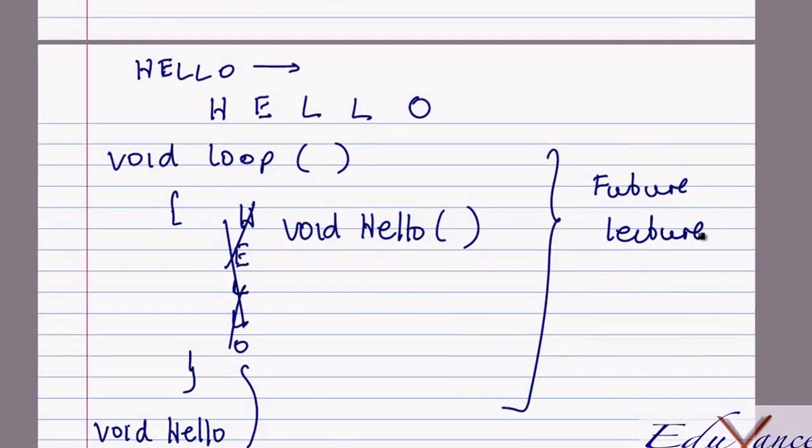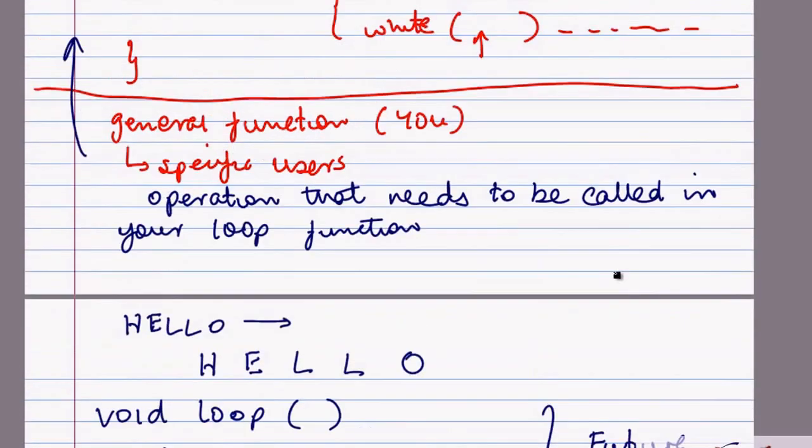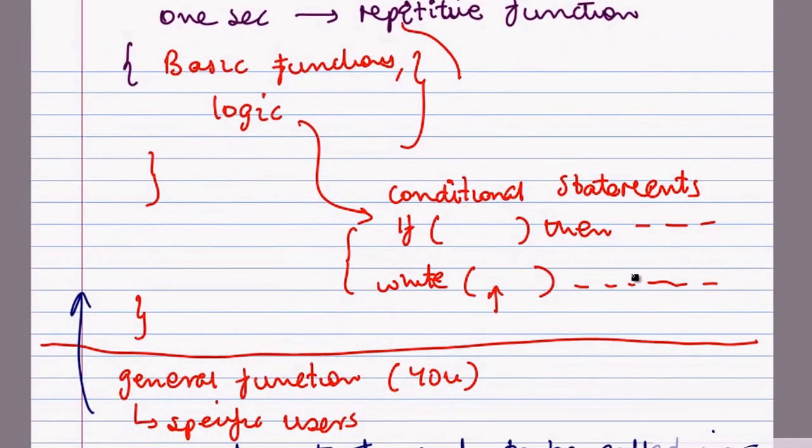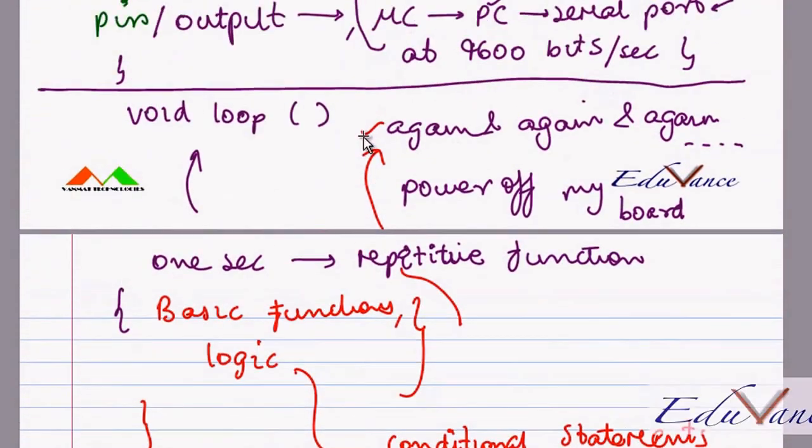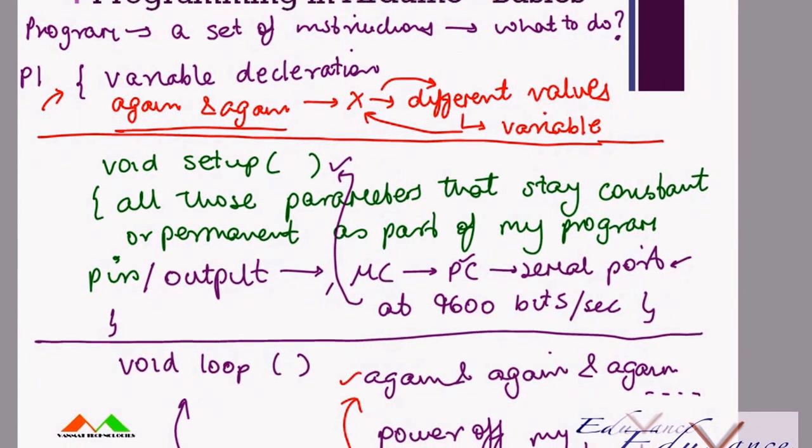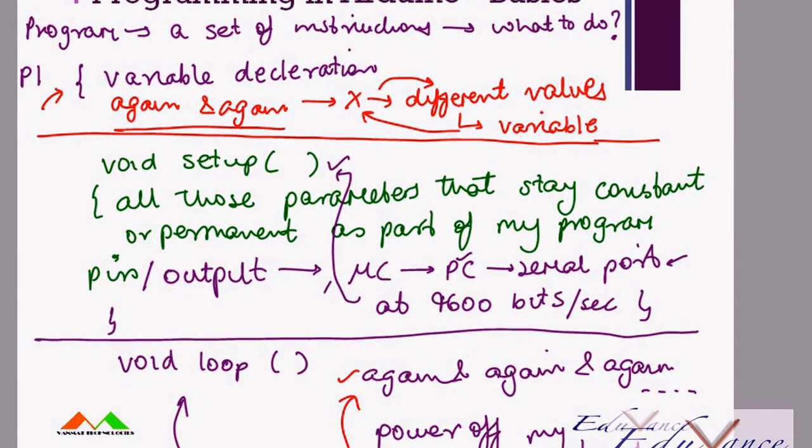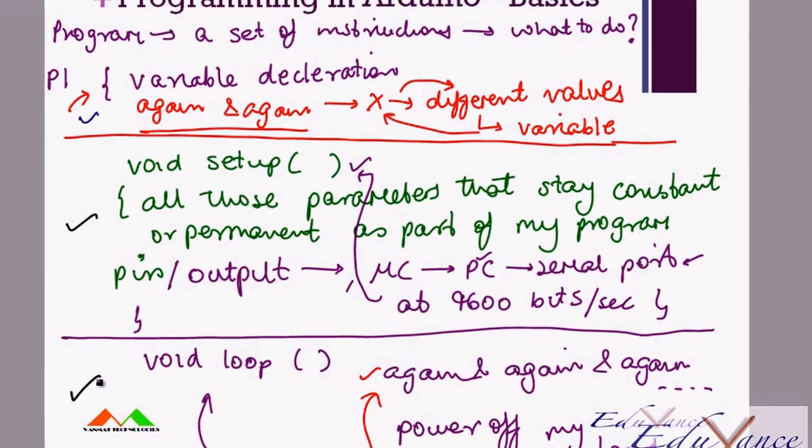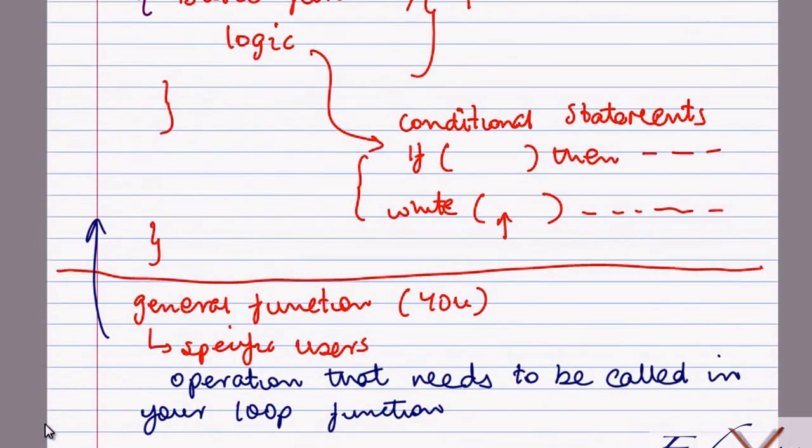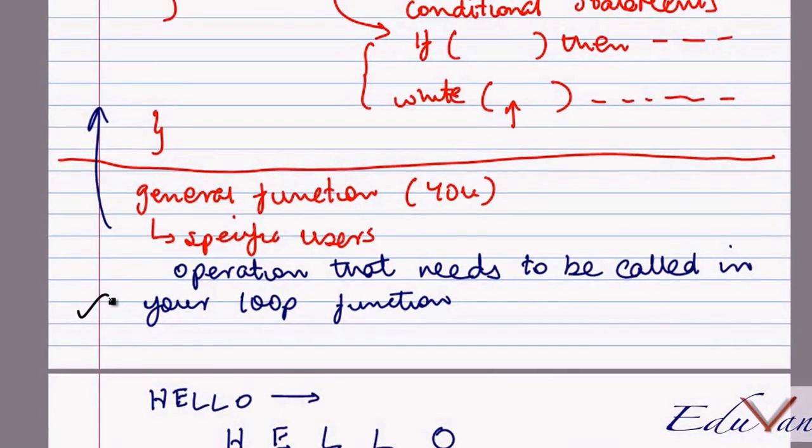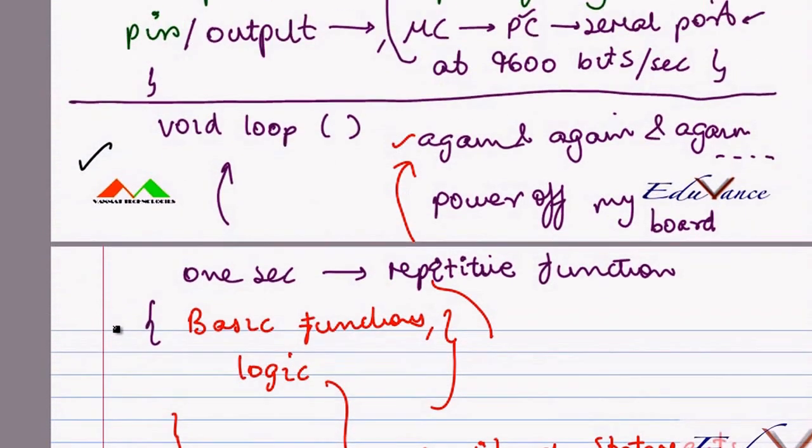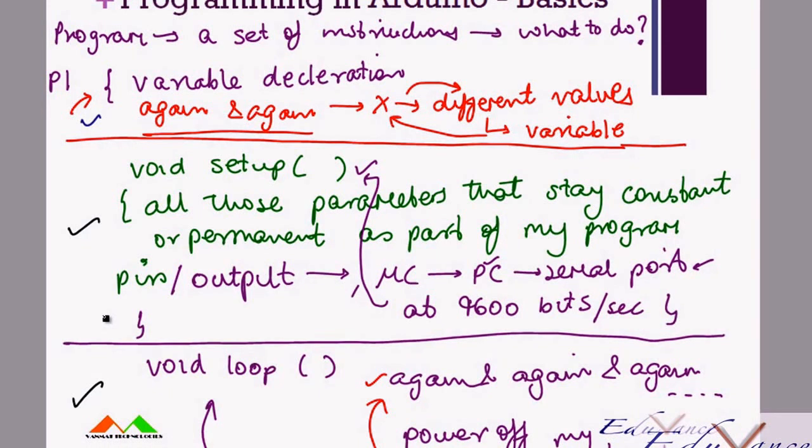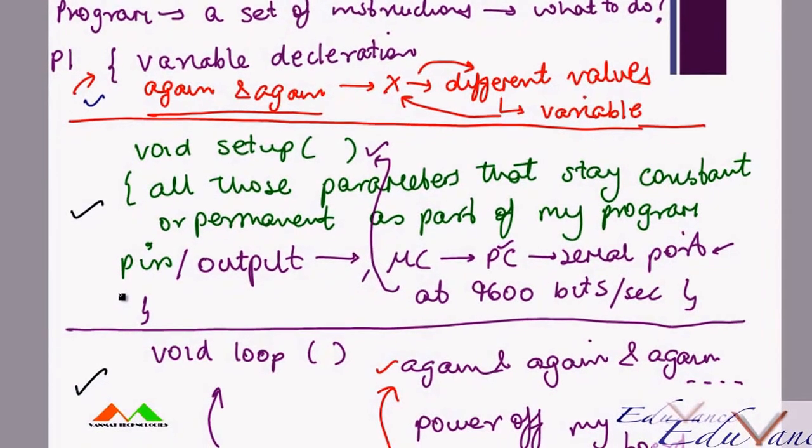I just want you to understand that when you are programming using Arduino, you can break up the program using four sections: your variable declaration, your setup, the loop, and the general functions. Let me point out that you don't have to follow this, but it's just a good style to follow since you are learning from scratch.